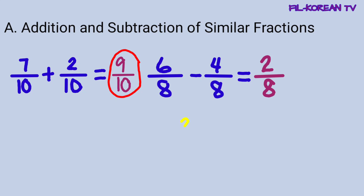I-divide lang natin yung given numbers sa kanilang prime factors. Yung prime factor ng 2 at 8 ay 2. 2 divided by 2 equals 1. 8 divided by 2 equals 4. Yung 1 at 4, wala na silang ibang common factor maliban sa 1. Kaya, hindi na tayo mag-divide. So, yung GCF ay itong ginamit nating prime divisor na 2.